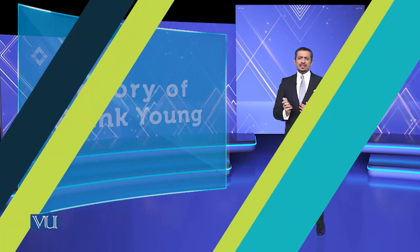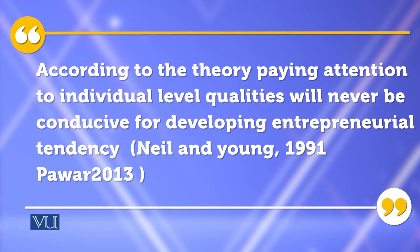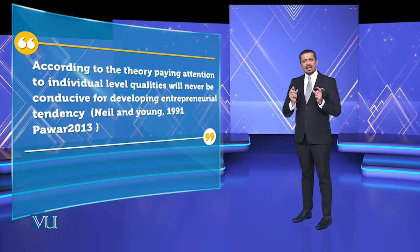We will discuss Module 110, which covers the theory of Frank Young. According to this theory, paying attention to individual-level qualities will never be conducive to developing entrepreneurial tendency — as stated by Young (1991) and elaborated in 2013. Frank Young's theory relates societal development and entrepreneurial development — breaking the status quo where monopoly divided things, from businessmen and macho business ideas to mafias and cartelization.